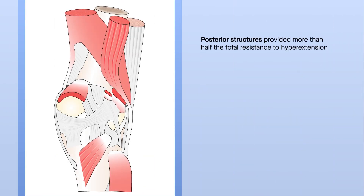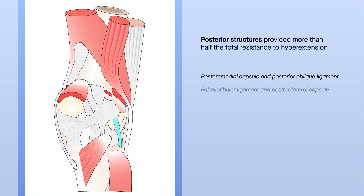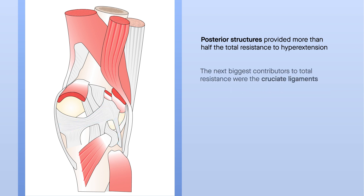Results showed that the posterior structures of the knee provided more than half the total resistance to hyperextension. These included the postural medial capsule and posterior oblique ligament, the fabelofibular ligament, and postural lateral capsule, and the oblique popliteal ligament. The next biggest contributors to total resistance were the cruciate ligaments, followed by medial and lateral structures.